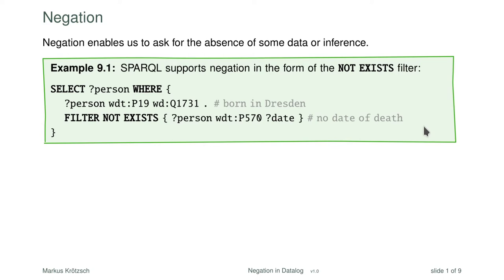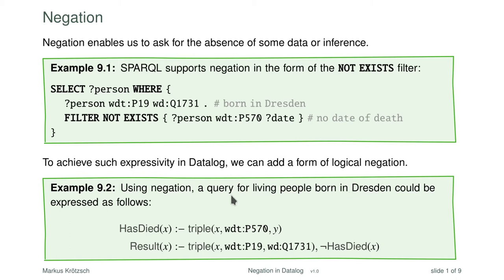This could also be achieved in a logic-based formalism like DataLog. I could come up with a query consisting of two rules: one that checks if somebody has died — X has died if there is a triple connecting X to some date of death — and the result I'm interested in are those X for which we have a born-in-Dresden triple and for which there is no "has died" fact. We use the negation symbol here and require that X has not died, and this is essentially what we would like to do. From this simple rule-based specification you can easily guess the intended meaning and read these rules quite intuitively.